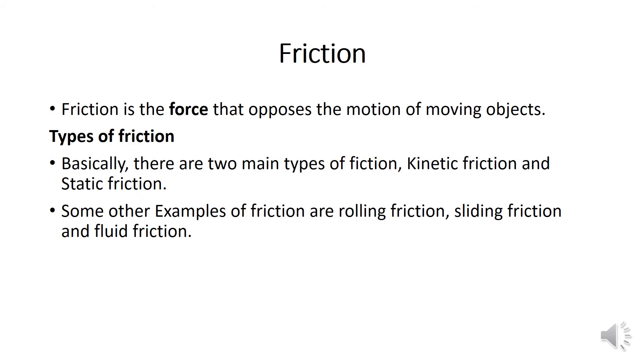We now move on to friction. Friction is a force that opposes the motion of a moving object. There are various types of friction. Basically, we consider two types of friction: one is the kinetic friction and the other is static friction. Some other examples of friction can be rolling friction, sliding friction, and fluid friction.